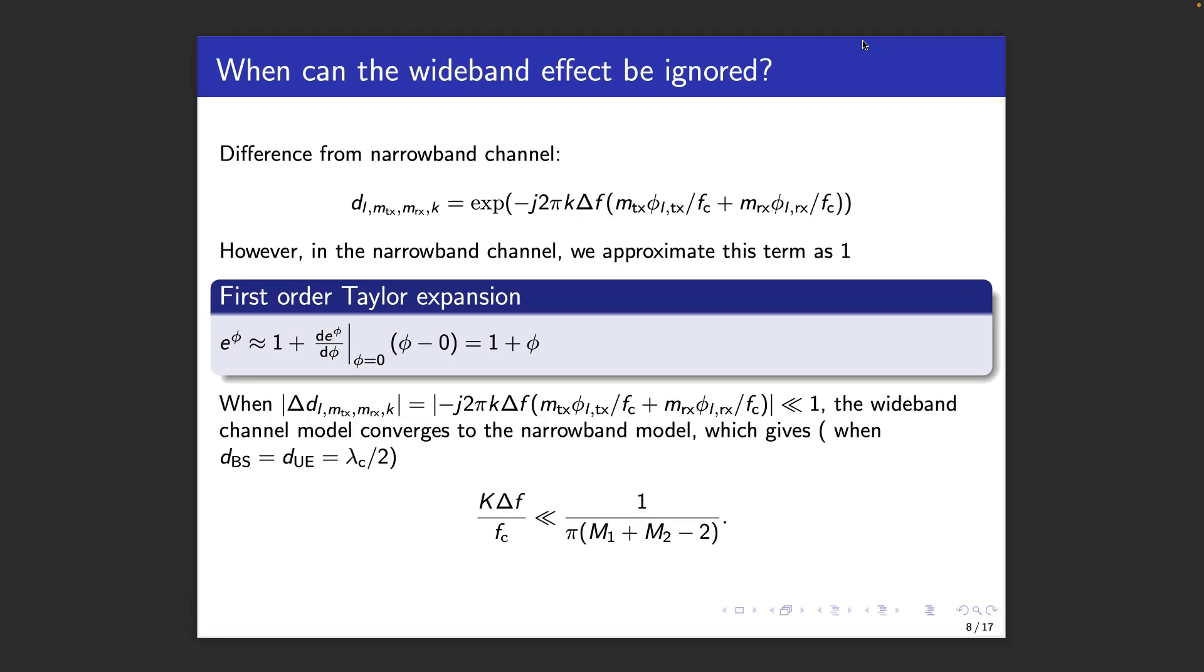When we perform a first-order Taylor series approximation, and assume that lambda over 2 spacing is applied at both arrays, we find the following condition for the narrowband channel model to hold. It basically says that the signal bandwidth normalized by the carrier frequency should be much smaller than the inverse of the sum of the elements of the two arrays, to some correction terms. So, when either the bandwidth becomes large or the arrays are large, the narrowband model is incorrect.